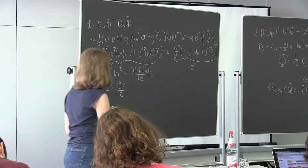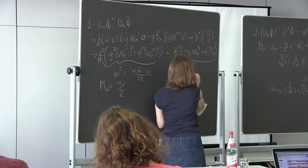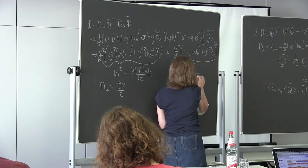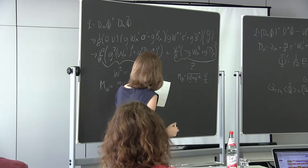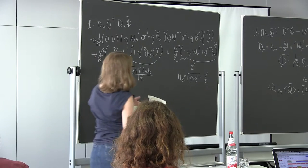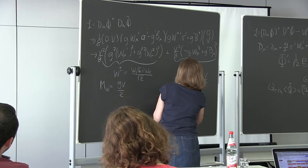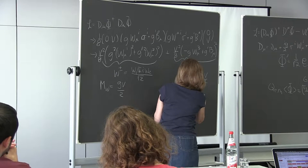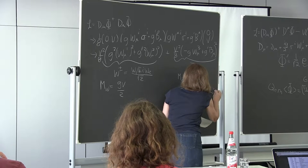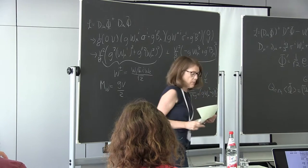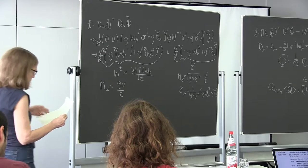The Z mass is M_Z = √(g² + g'²) · v/2. We can work back and write Z_μ as a combination g W³_μ minus g' B_μ. So there's the Standard Model with masses for charged and neutral gauge bosons.